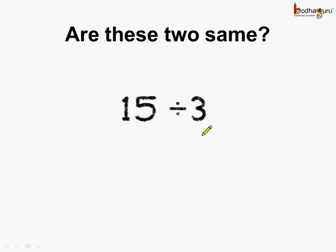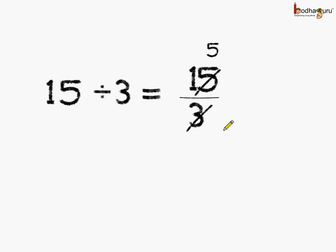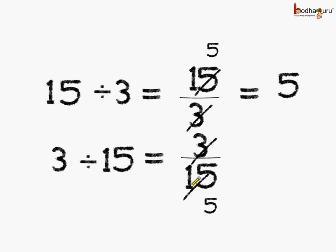What is 15 divided by 3 equal to? And what is 3 divided by 15 equal to? Are these two the same? Let us try and see. If we do 15 divided by 3, we get 15 by 3, and this can be reduced. 3 fives are 15, so the answer is equal to 5 by 1, which is equal to 5. Now if we do 3 divided by 15, this is equal to 3 by 15. This can also be reduced — 3 fives are 15 — and we get the answer as 1 by 5. So we see that if we change the order of division, the answers are different.